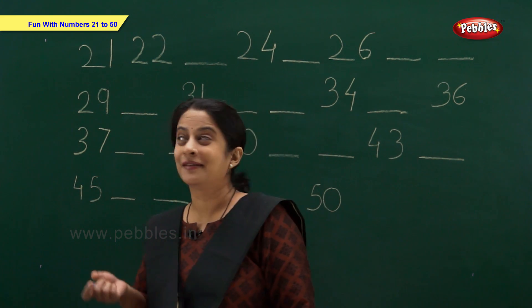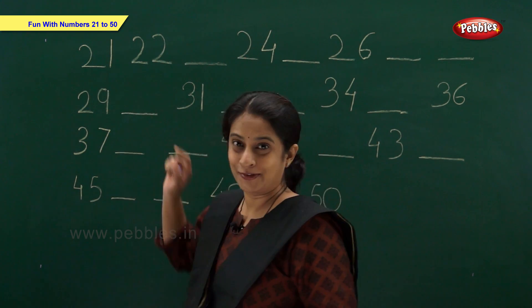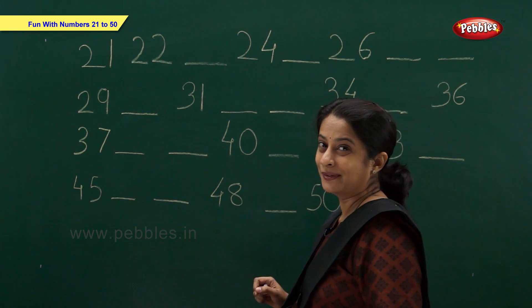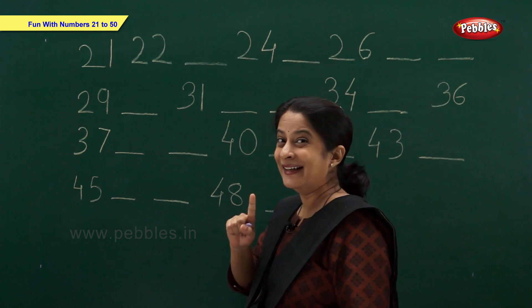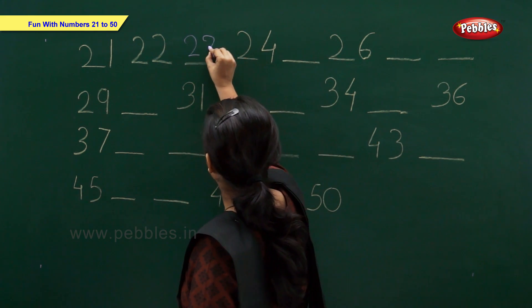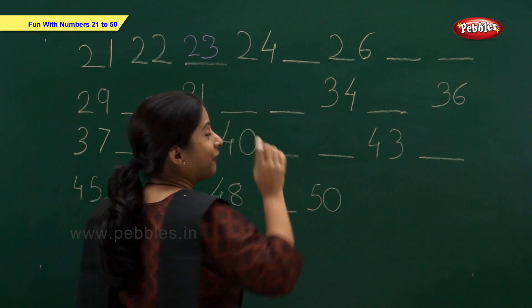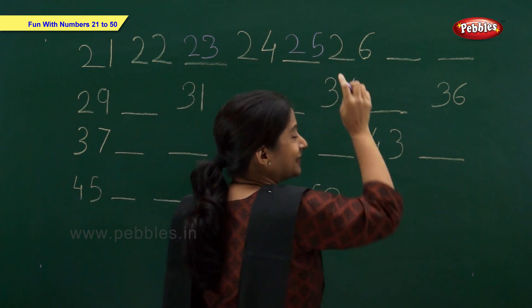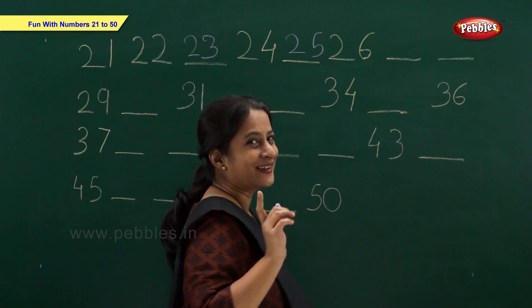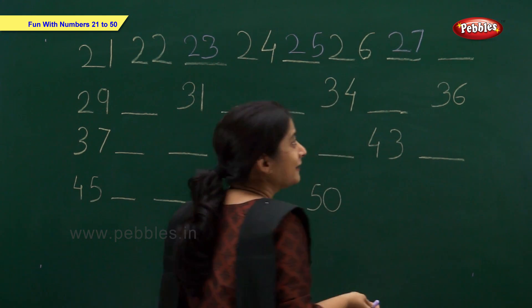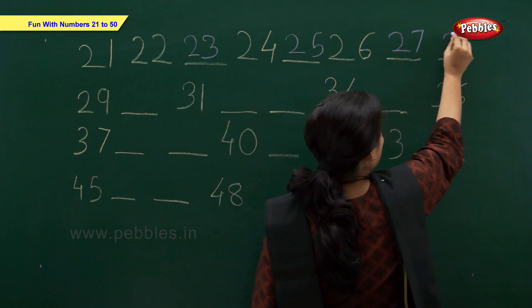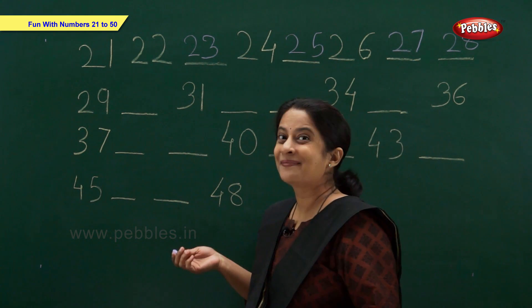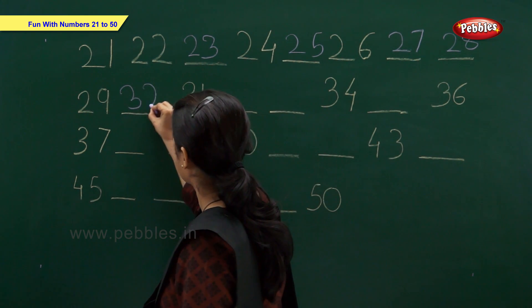Now let us write the missing numbers. We have number 21, 22, the missing number, and number 24. Which number comes after 22? 23. Then 25, 26, and which number comes after 26? 27. After 27 comes 28, 29, and after 29, write 30.